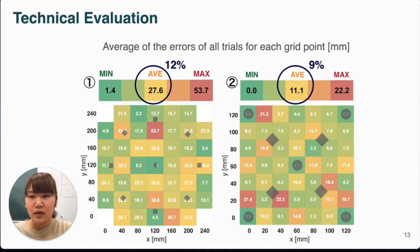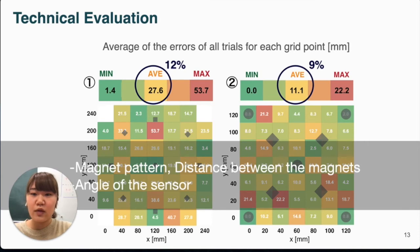Here, the intensity of the error depends on the distance between the magnets, magnet pattern, and the angle of the sensor.